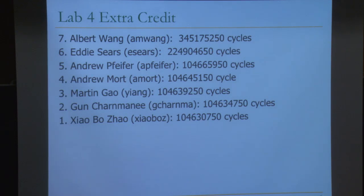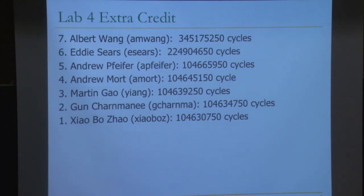And Xiao Bo Zhao. They're all within about 1% of each other. Maybe if we change the instructions a little bit, the order would be different — it's mainly just initial values of the branch predictors, so effectively they're all similar. I'm glad that you guys did the extra credit, and here's your recognition. You can say that you were in the top five in lab 4 of 447.